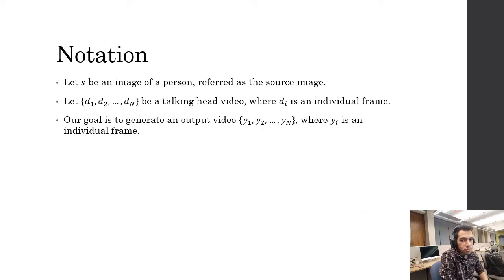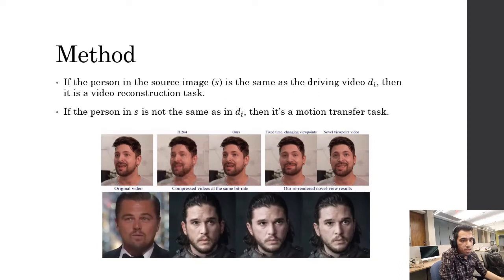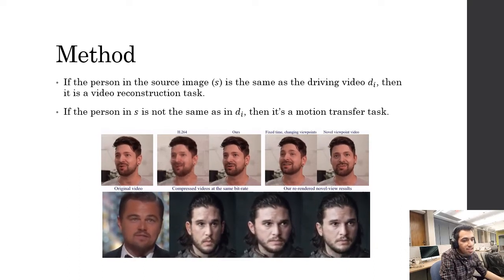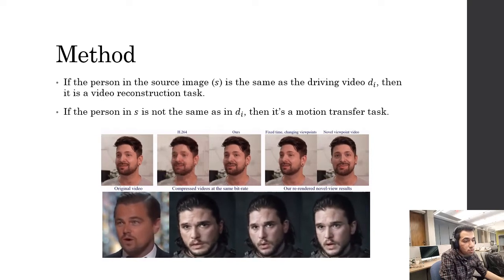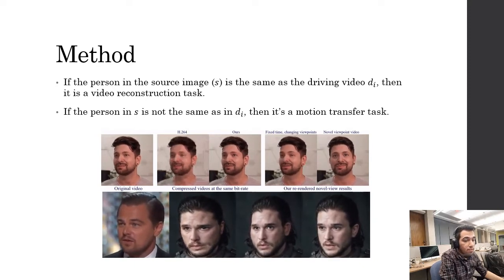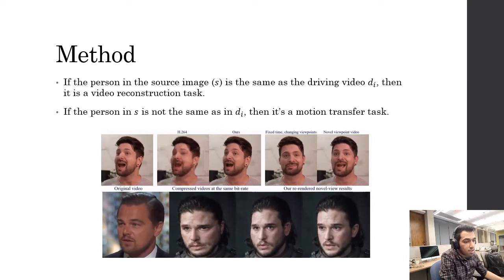Let's first level set on the notations. Let S be an image of a person referred to as the source image. Let D be a talking head video called the driving video, where DI are the individual frames and N is the total number of frames. Our goal is to generate an output video where the identity in Yi is inherited from the motion derived from DI and the source image S. If the person in S is the same as in the driving video, it's a video reconstruction task; otherwise, it's a motion transfer task.